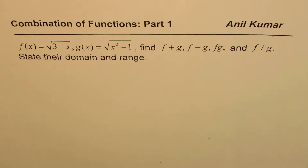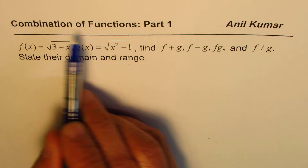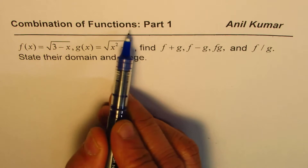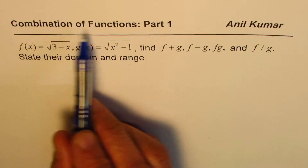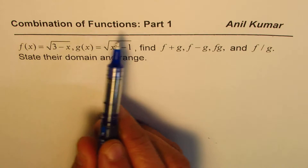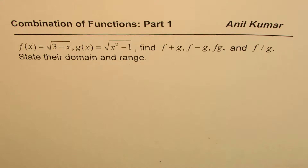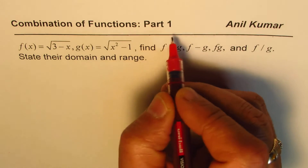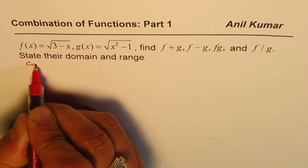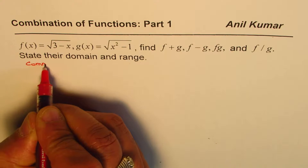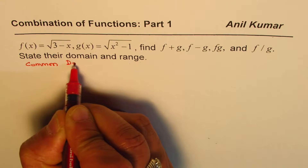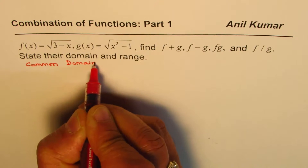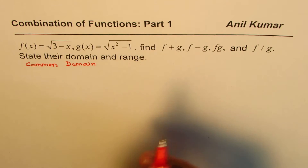Let's try to understand what combination of functions means and when we can do the combination. We can always perform the combination on the common domain. So whenever you're doing a combination of functions, you have to look for the common domain. That is very important — always look for the common domain to perform these operations.